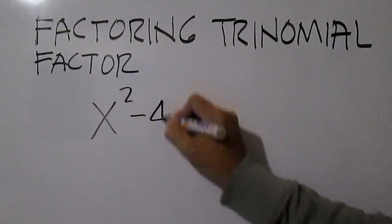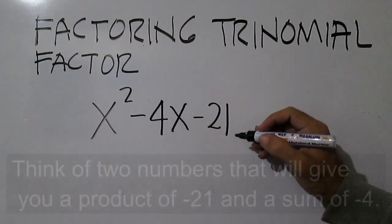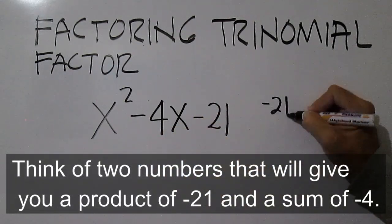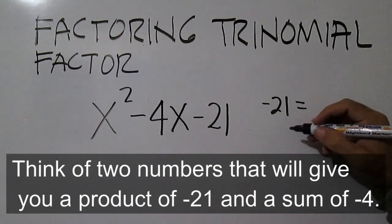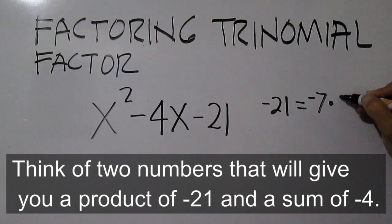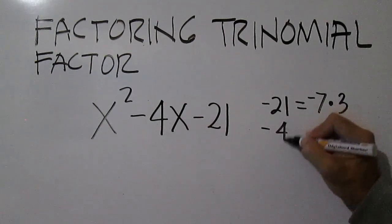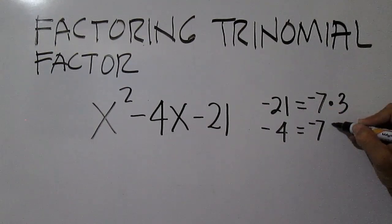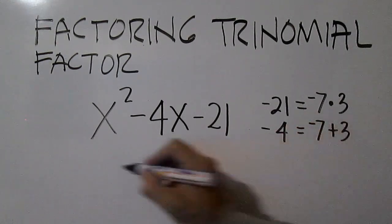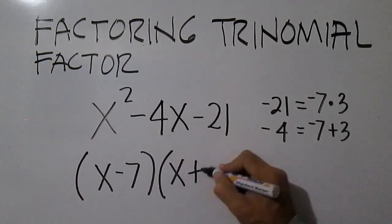Factor x squared minus 4x minus 21. Think of two numbers that will give you a product of negative 21 and a sum of negative 4. Negative 21 is equal to negative 7 times 3. Negative 4 is equal to negative 7 plus 3. The factors are x minus 7 times x plus 3.